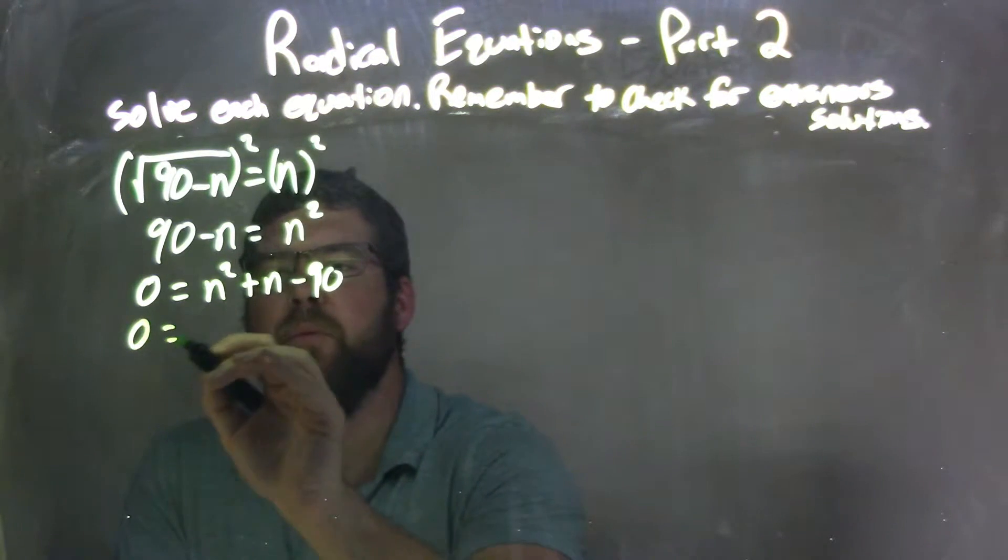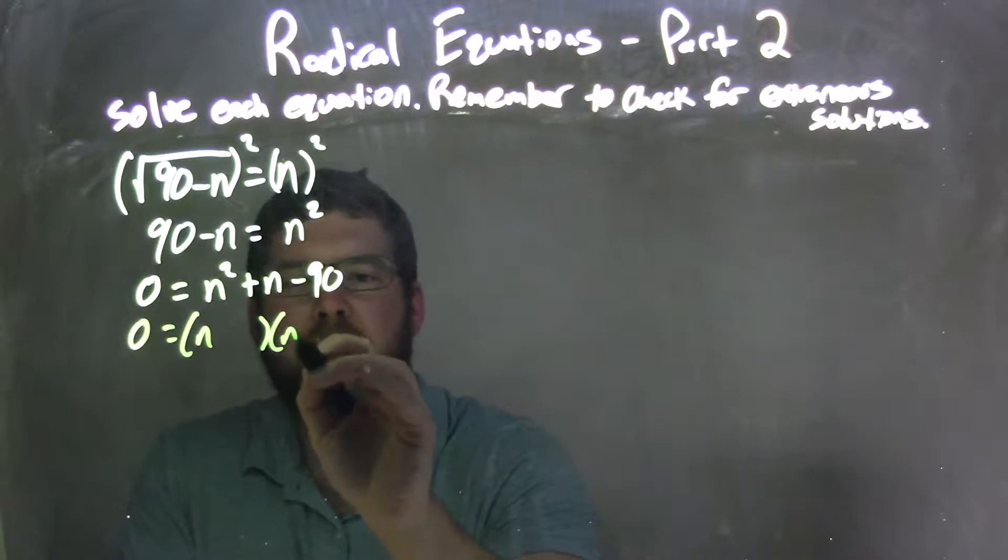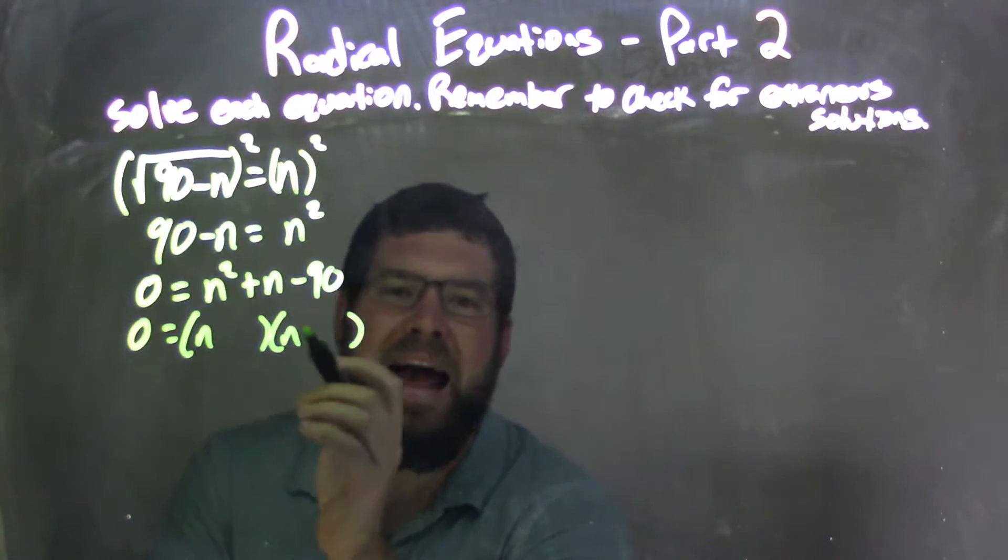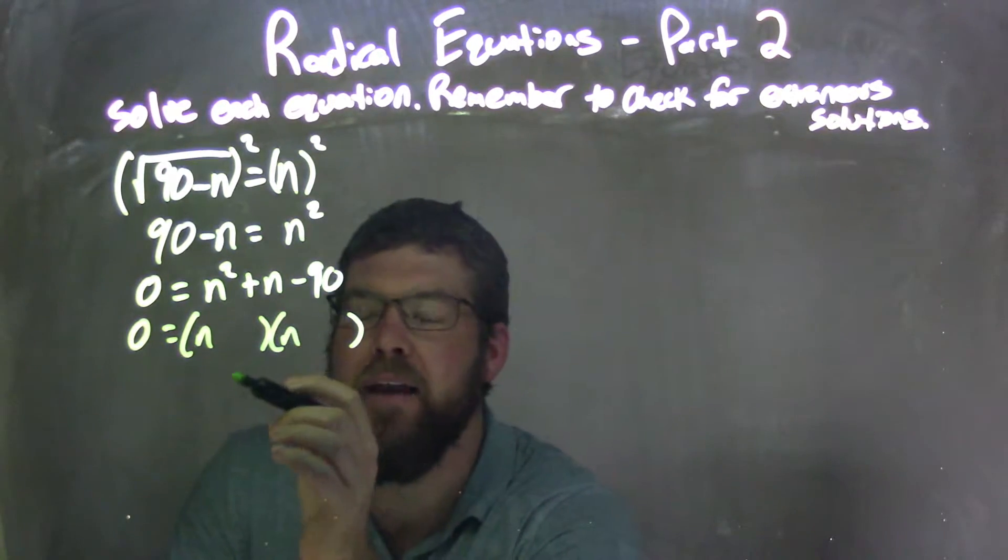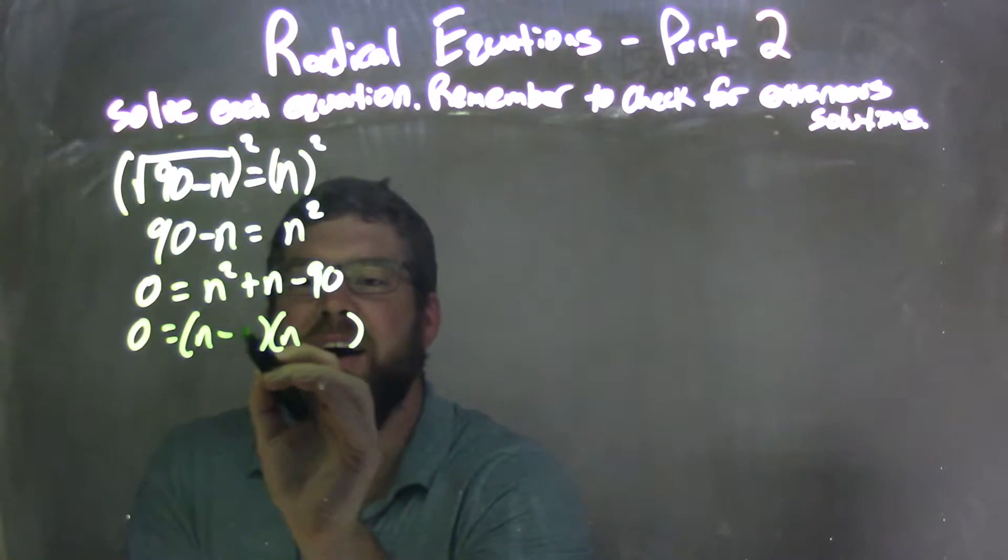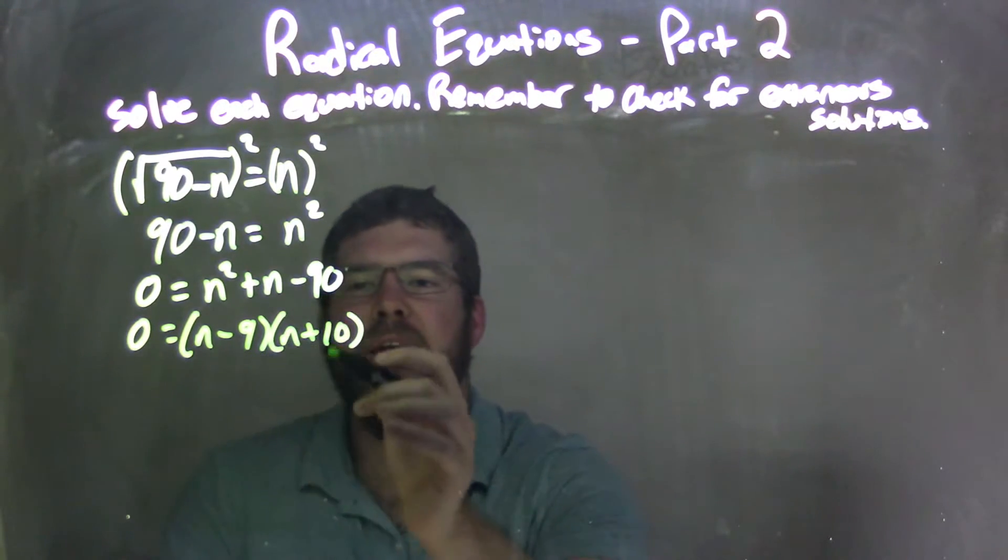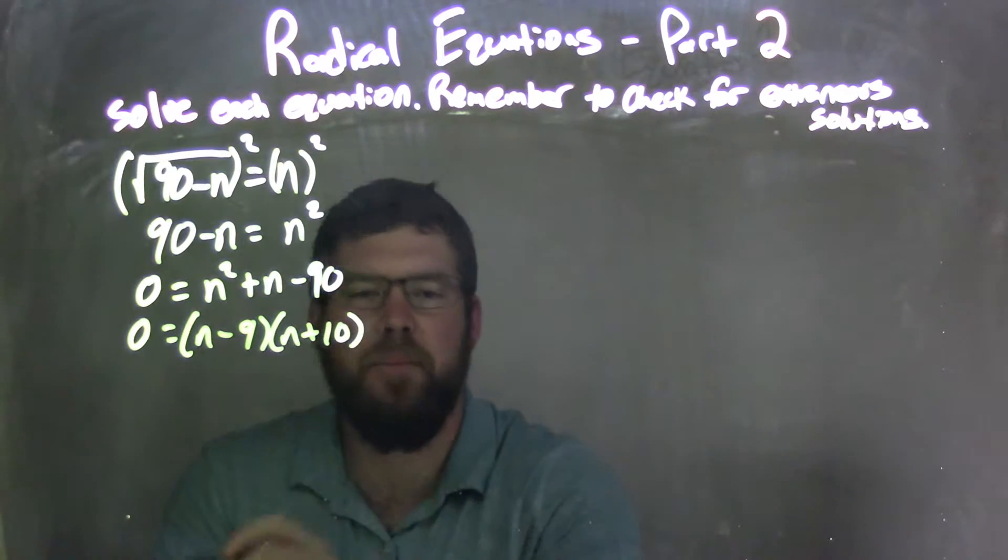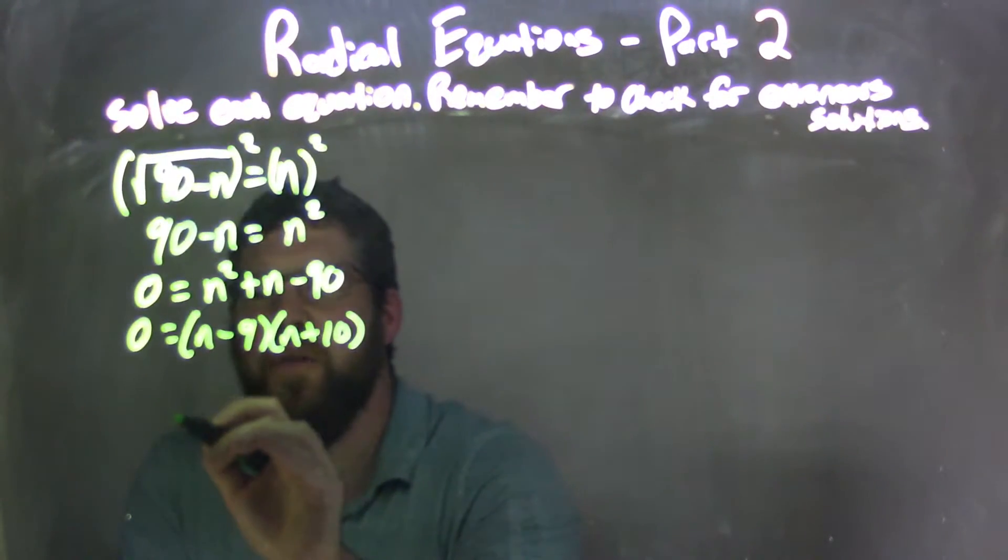Now I need to factor that. What two numbers multiply to be negative 90 but add to be 1, what's in front of the n? And that's a negative 9 and a positive 10. Negative 9 times 10 is negative 90. Add them together, get positive 1.